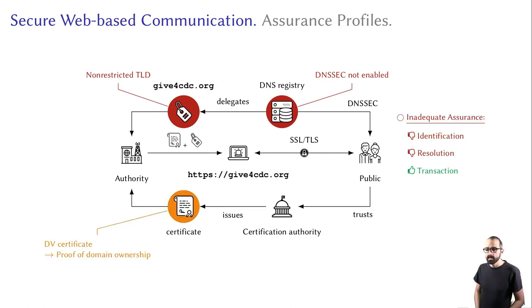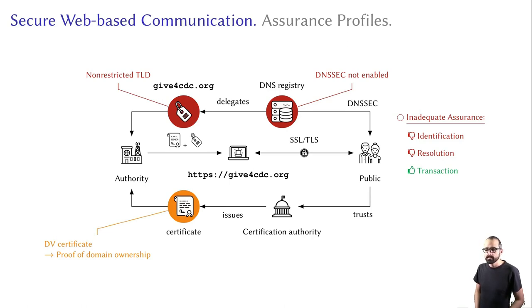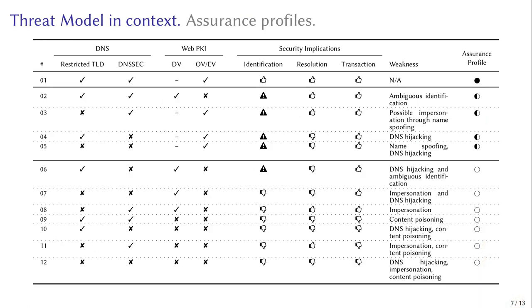Finally, let's say that you only provide a DV certificate without any DNSSEC or restricted TLD, which is the case for the COVID fundraising website of the CDC Foundation under gift4cdc.org. In this case, identification and resolution are insecure, and as such we would say that this setting provides only an inadequate assurance profile. For a general overview of all combinations and their security implications, I would refer you to our paper.